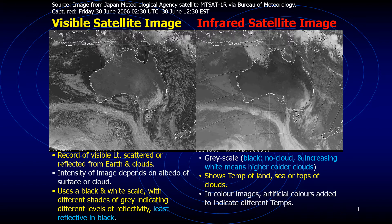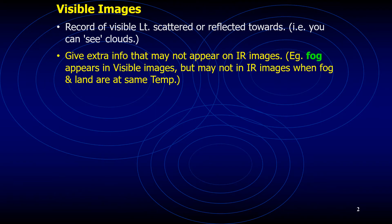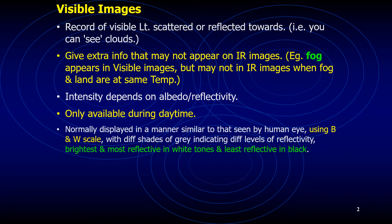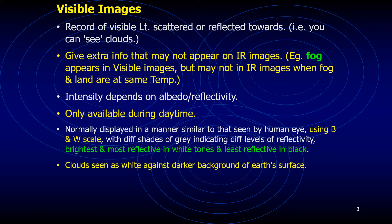I wanted to make a more detailed video on the topic because I want to keep my videos short but also give you more access to the knowledge associated with every concept. I talked about visible images, which basically show the visible light scattered or reflected towards the satellite from the earth and clouds. The basis of visible images is that the intensity of the image depends upon the albedo or the reflectivity of the underlying surface or cloud.